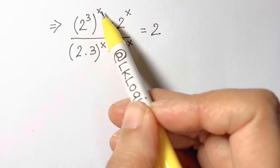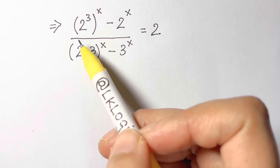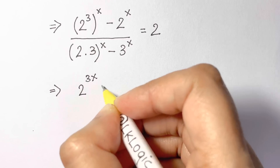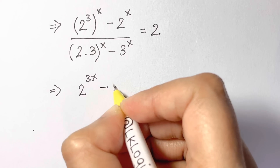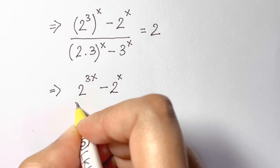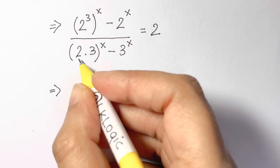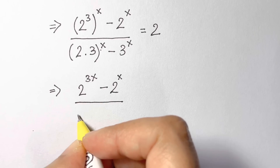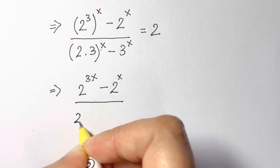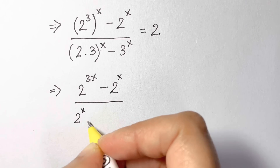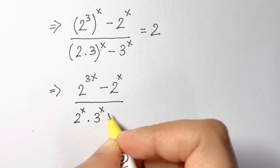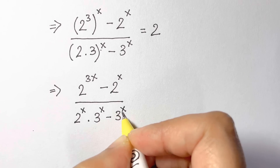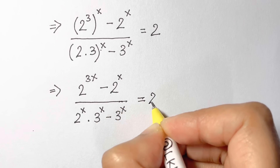Now we apply the power to power rule, so we multiply the powers. We get 2 to the power of 3x minus 2 to the power of x, over — using the product to a power rule, each factor is raised to that same power — 2 to the power of x times 3 to the power of x, minus 3 to the power of x, equals 2.